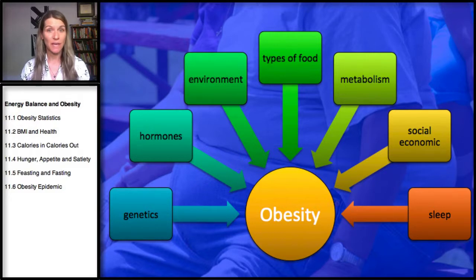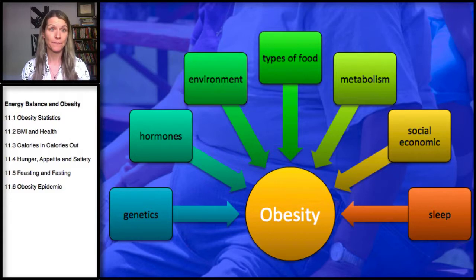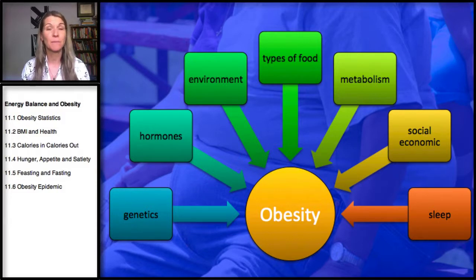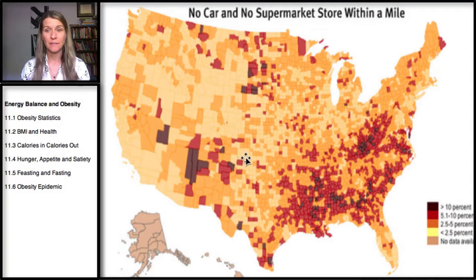We've talked a lot about the types of food that contribute to poor health or weight gain, and we have to think about how this could be based on the environment an individual lives in. In many poor urban neighborhoods there is limited access to fresh vegetables, and many residents have to buy their groceries at convenience stores. These are called food deserts, and in this image the darker colors represent the greater number of food deserts.